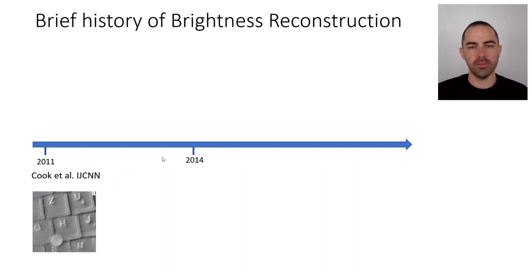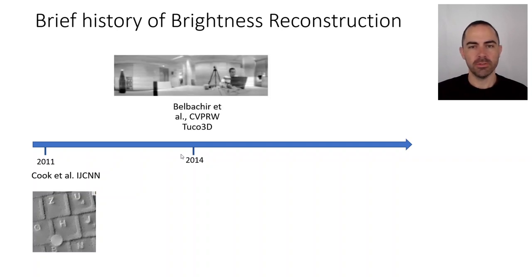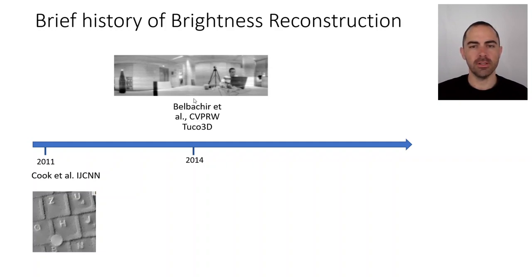Not much happened until maybe 2014, and this was the year of the panoramas. There was a CVPR workshop paper presenting the Tuco 3D — a device that has two rotating line DVSs — and with some periodic conditions they are able to integrate the events and obtain 360-degree panoramas such as this one, reconstructed in grayscale from the events.